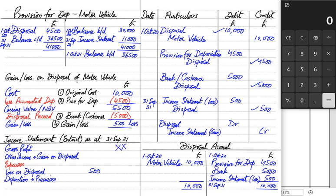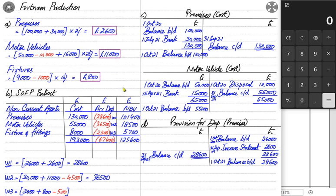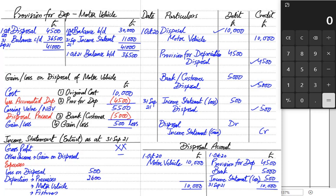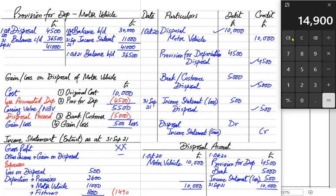The income statement extract starts with gross profit, adds any gain on disposal under other income, then deducts depreciation: premises 2,600, motor vehicles 11,000, and fixtures 800 — totalling 14,400 in depreciation expenses plus any loss on disposal, giving total expenses of 14,900.